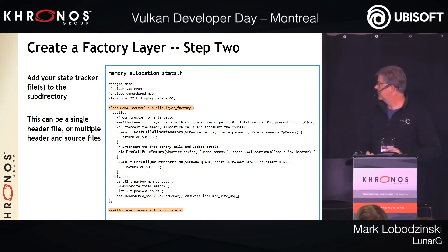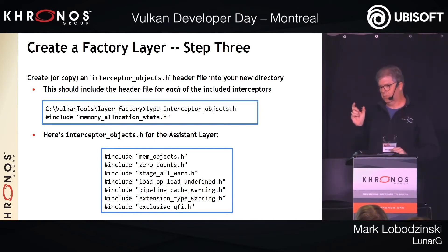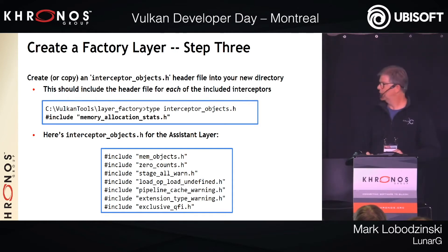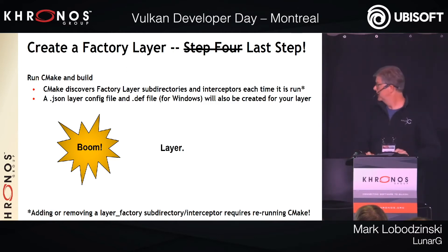In this case it's just done in a header file called memory allocation stats. There's a standard header file used for each of the layers called interceptor_objects.h — you just include your interceptor headers in there. You can see the assistant layer has seven or eight interceptors covering ten or so functions. Then you run CMake, which pulls the files out of the directories, builds everything, and spits out a layer you can run straight away.